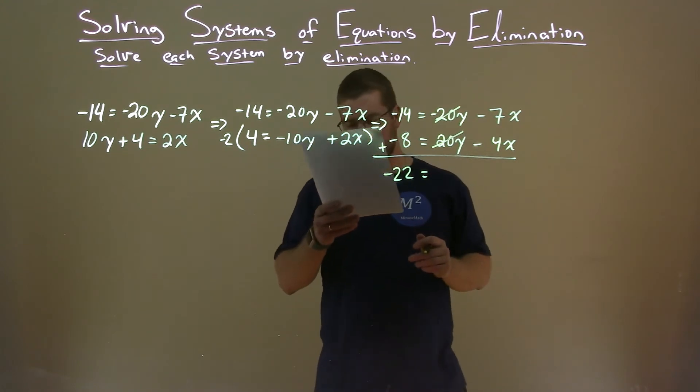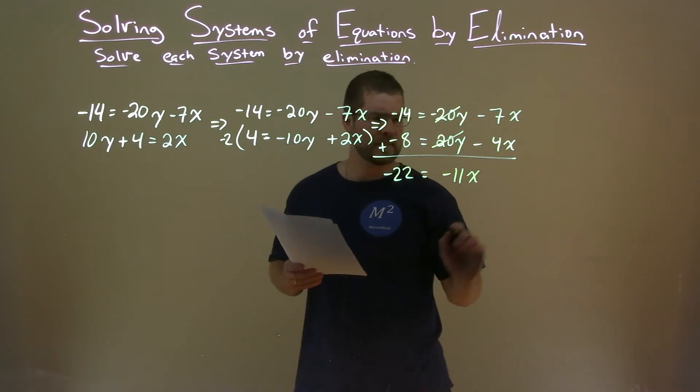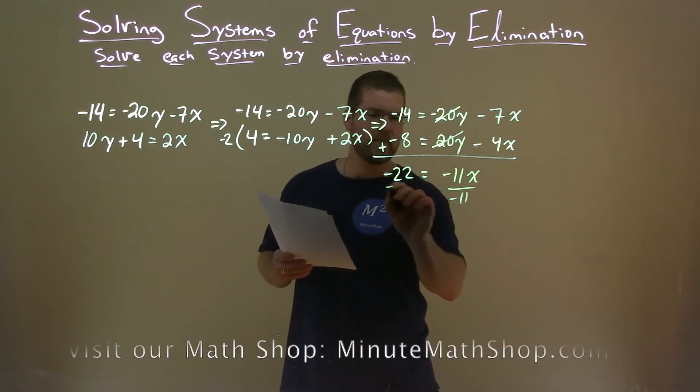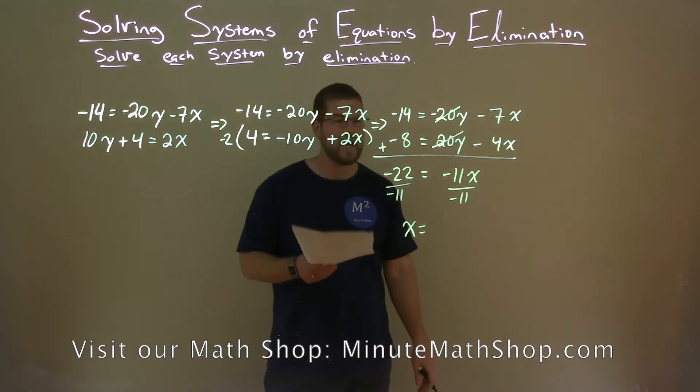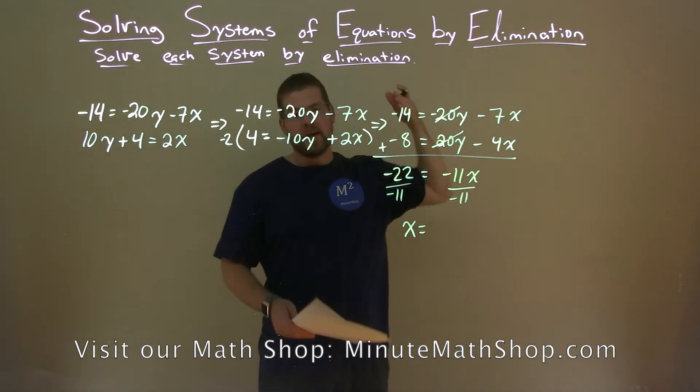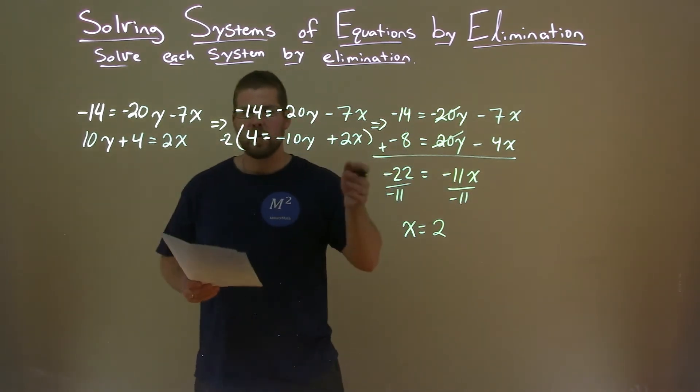Negative 7x minus 4x is a negative 11x. We want to get x by itself. Divide both sides by negative 11, and x by itself here. Negative 22 divided by negative 11. Negative divided by negative is a positive, and so we have a positive 2 here. 22 divided by 11 is 2. So, x is 2, but we're not done.